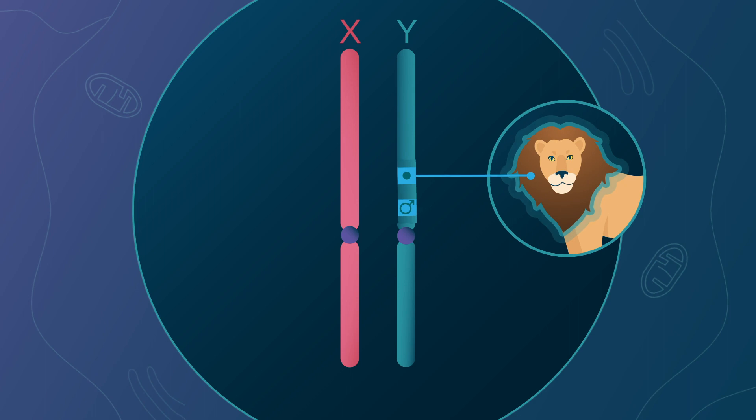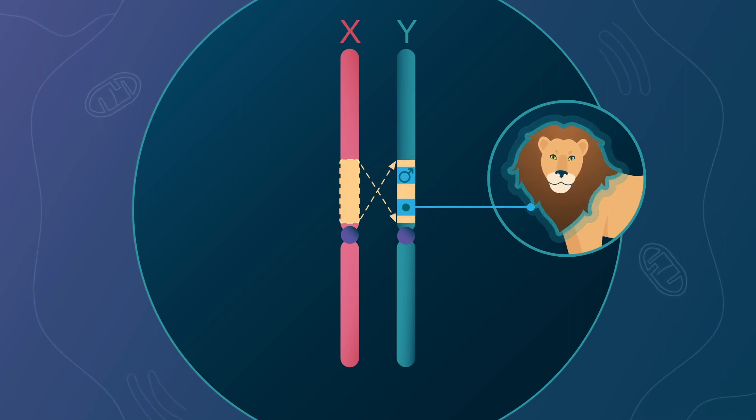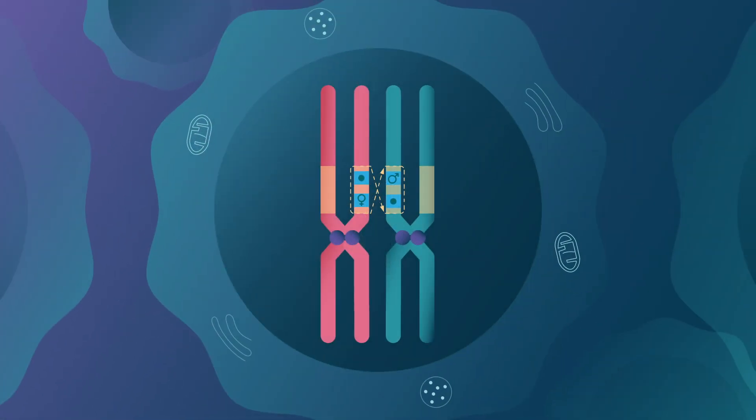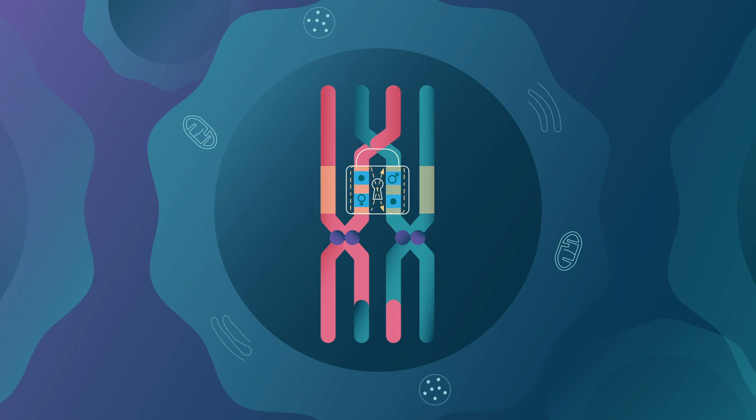Such linkage can occur through chromosomal inversions, so that only male lions develop a mane, for example. Inversions, indeed, prevent recombination, that is, genetic mixing, between the X and Y chromosomes.